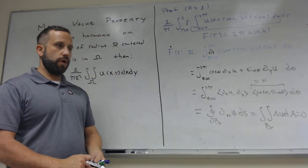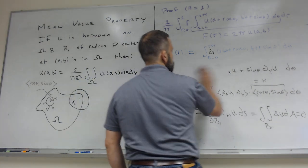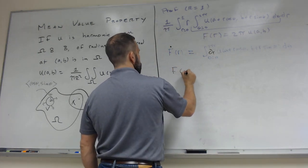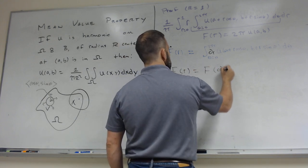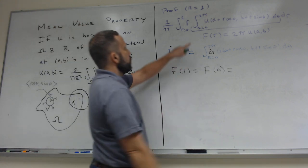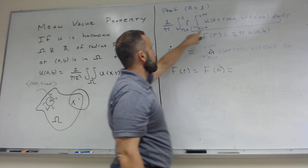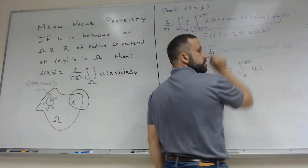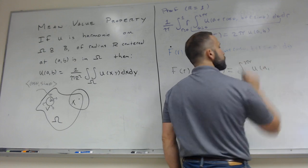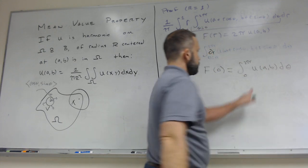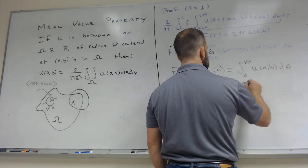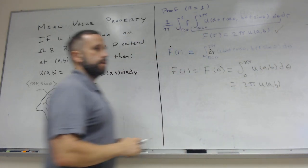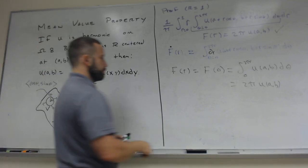In other words, F'(r) equals zero. Well, if F'(r) equals zero, this means F(r) equals F(0). But what is F(0)? If I plug in r = 0 into the integral, r cos θ and r sin θ are both zero, so I get the integral from 0 to 2π of U(A, B) dθ. And since U(A, B) is a constant with respect to θ, this equals 2π · U(A, B). So I've verified that F(r) equals 2π times U(A, B).